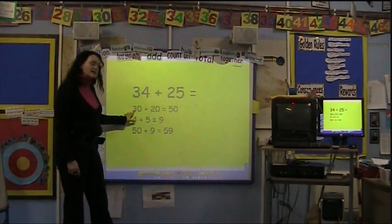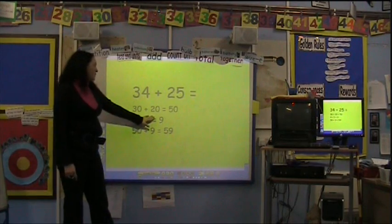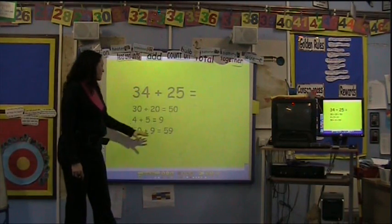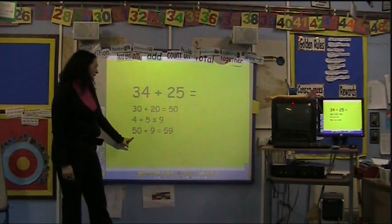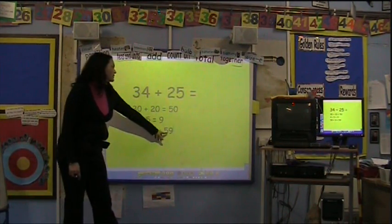So then we would just add the tens. 30 add 20 equals 50. 4 add 5 equals 9. We then put the numbers back together again. 50 add 9 equals 59.